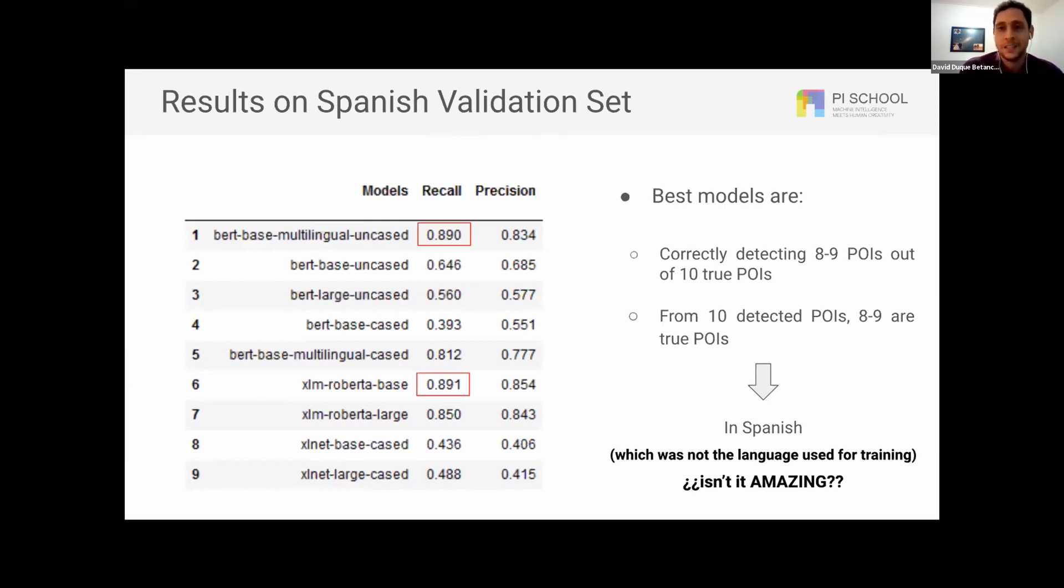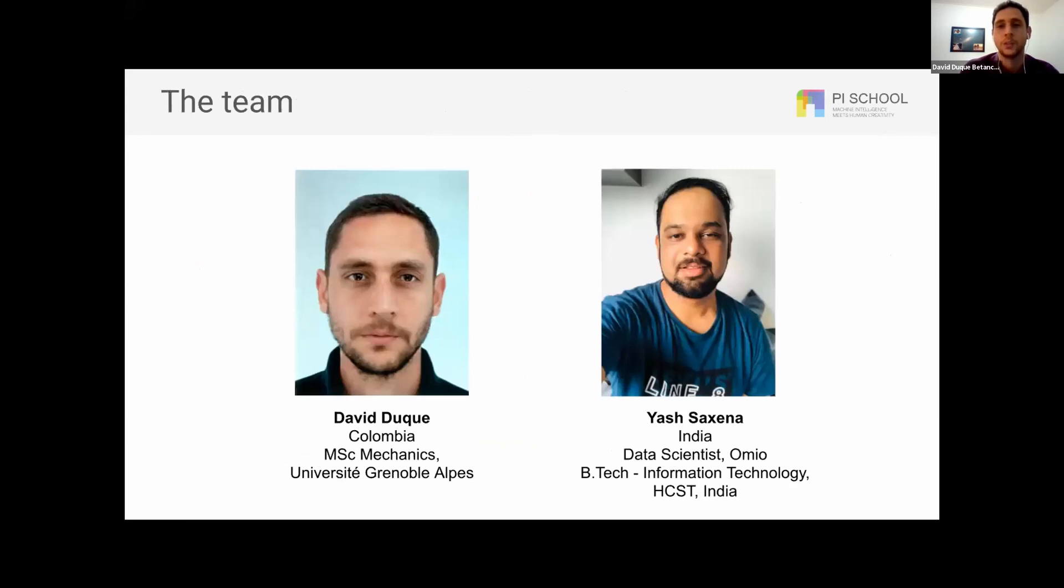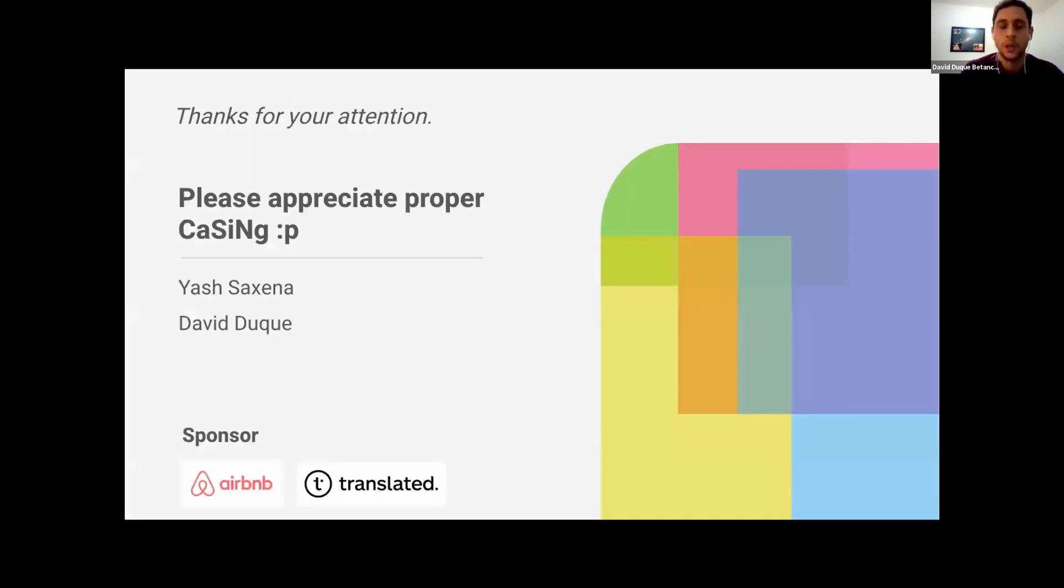The thing is that Airbnb needs a proper tool that recases or that finds points of interest into multiple languages. So yeah, it is a great model, and it is a great tool. And we are Yash Saxena, who is a data scientist, and me, David Duque. And we would like to thank Pi School and our sponsors, Airbnb and Translated, for letting us be part of this project. Thank you very much for your attention.